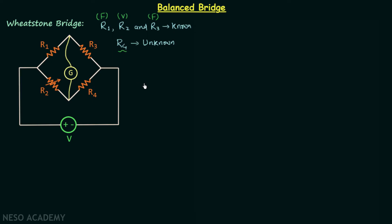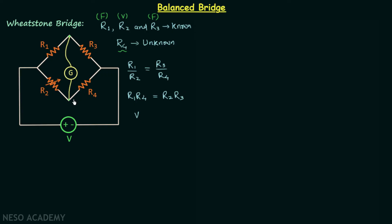According to the principle, when the galvanometer shows zero deflection, this means the potential at both points are the same, and therefore the voltage across the galvanometer is equal to zero. This will happen when the ratio R1 over R2 is the same as the ratio R3 over R4, or we can write R1 multiplied by R4 is equal to R2 multiplied by R3.